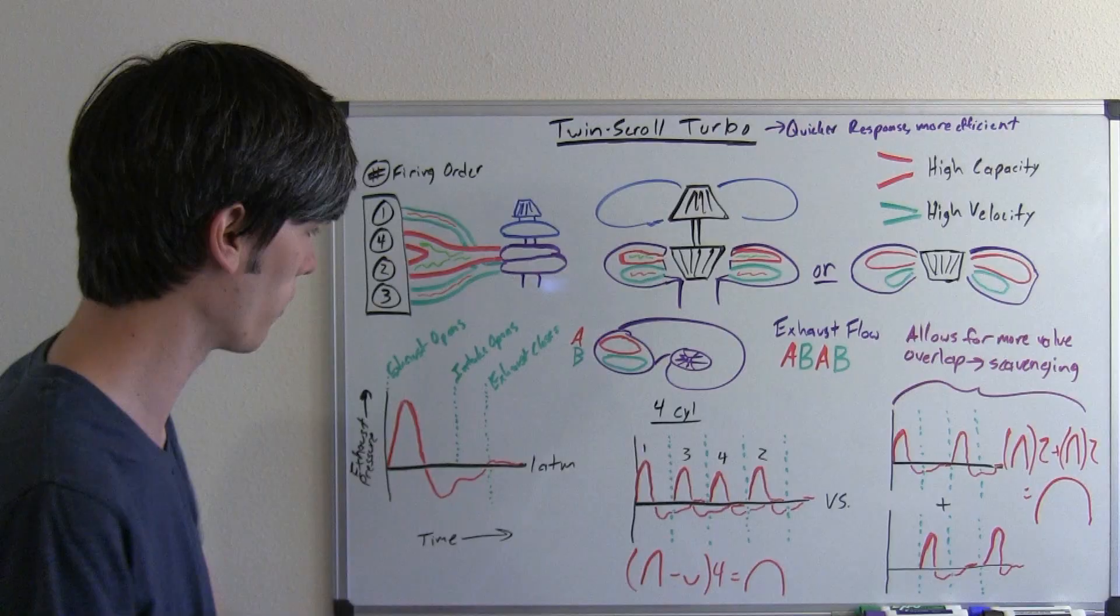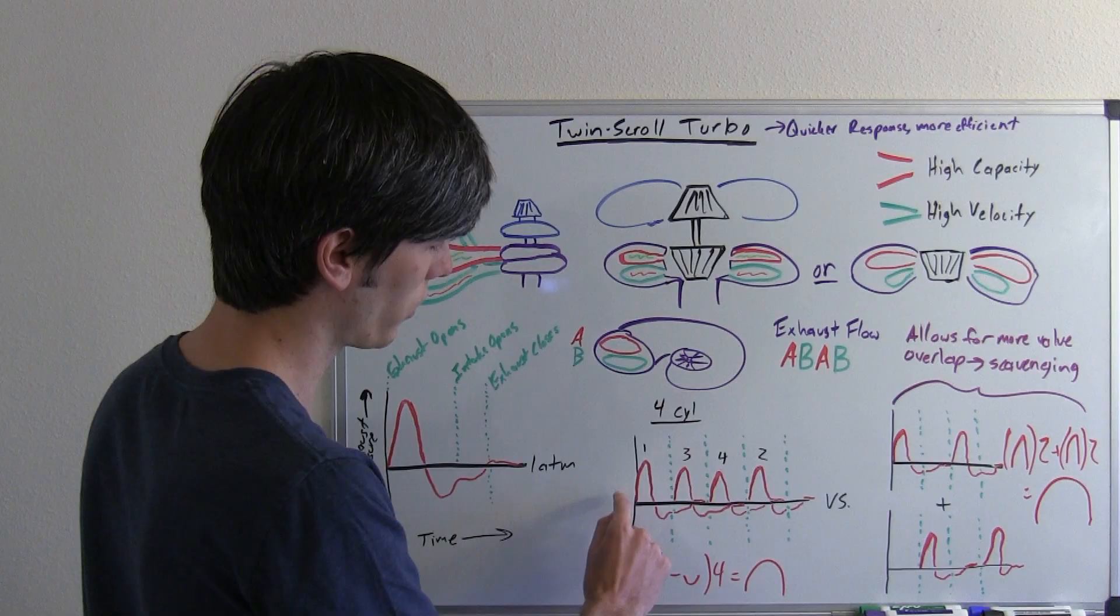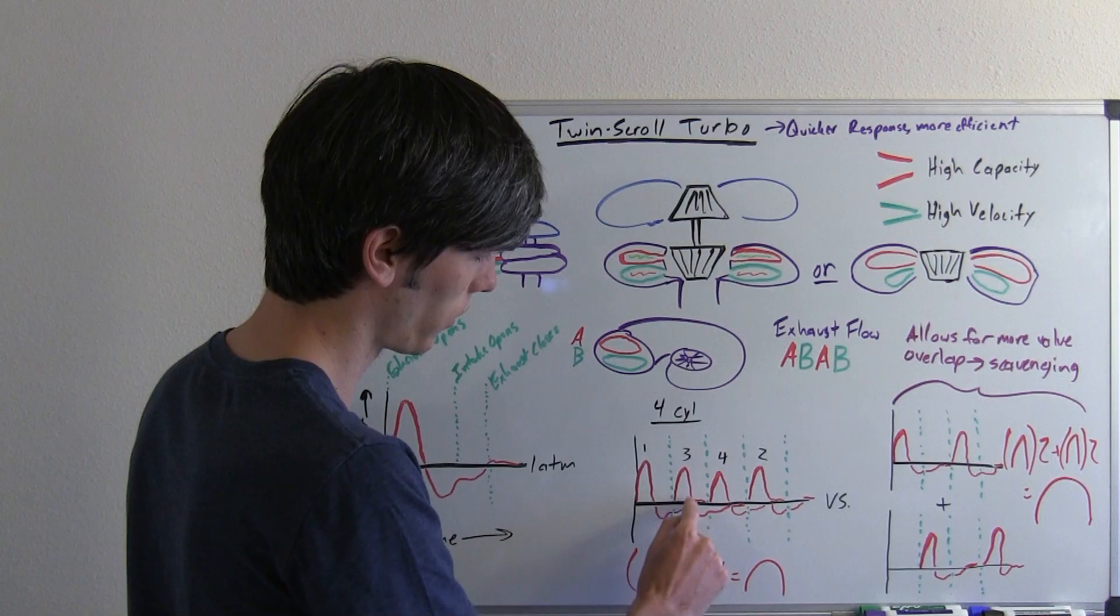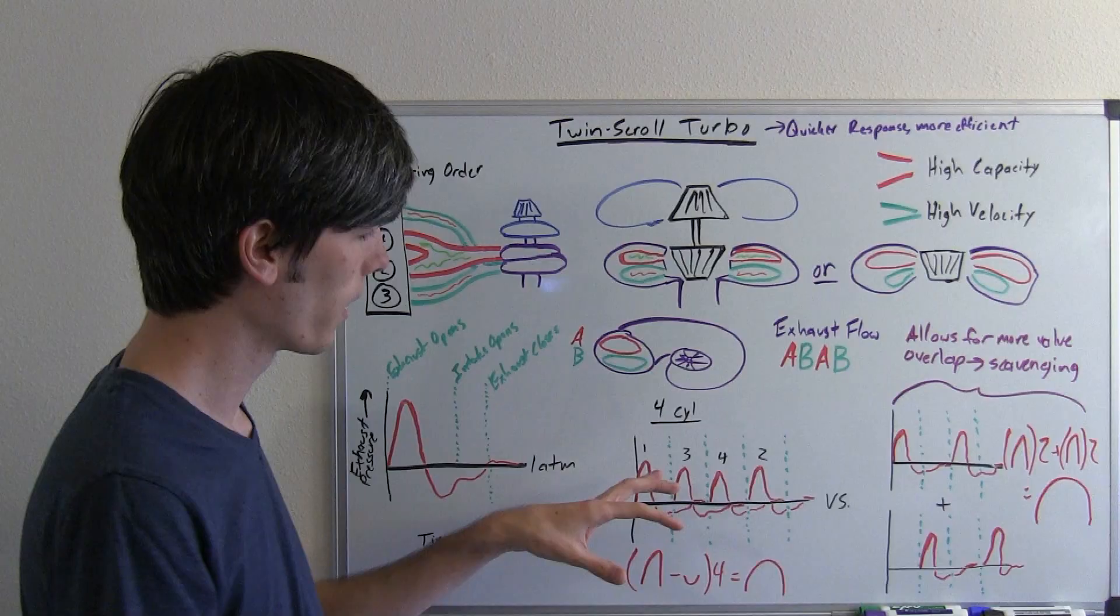Now, when you have a 4 cylinder engine this is what it's going to look like. So you're going to have your cylinder 1 fire and then you're going to have that pressure and then you're going to have your cylinder 3 fire and you're going to see that pressure curve and then your cylinder 4 fire and then that pressure curve, so on and so forth.